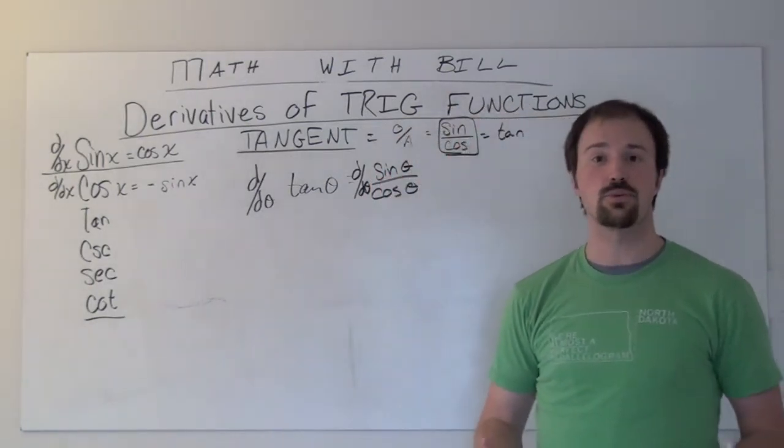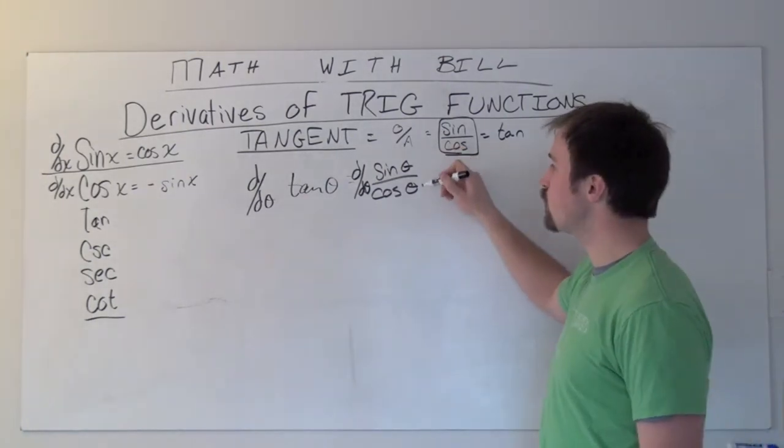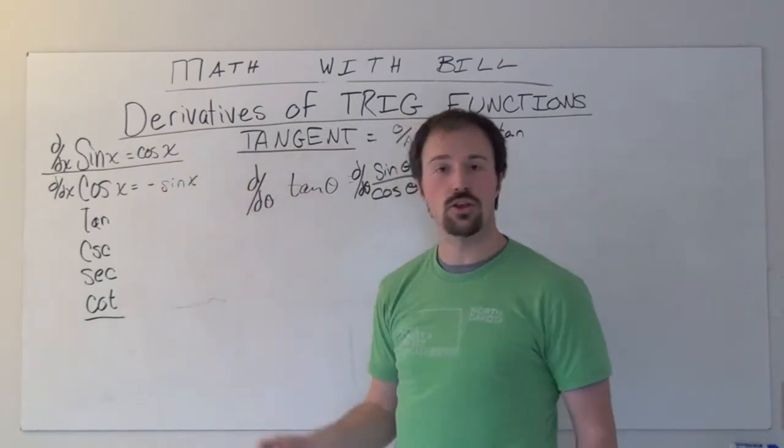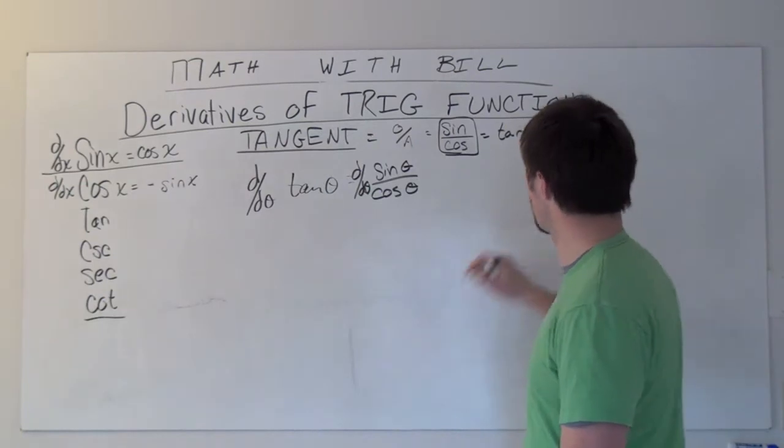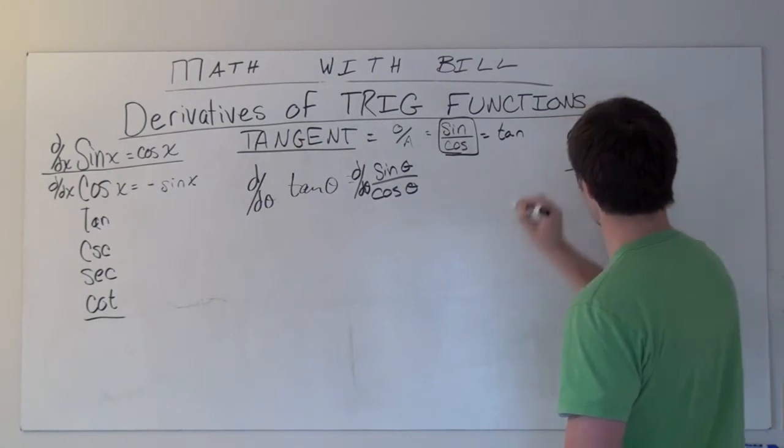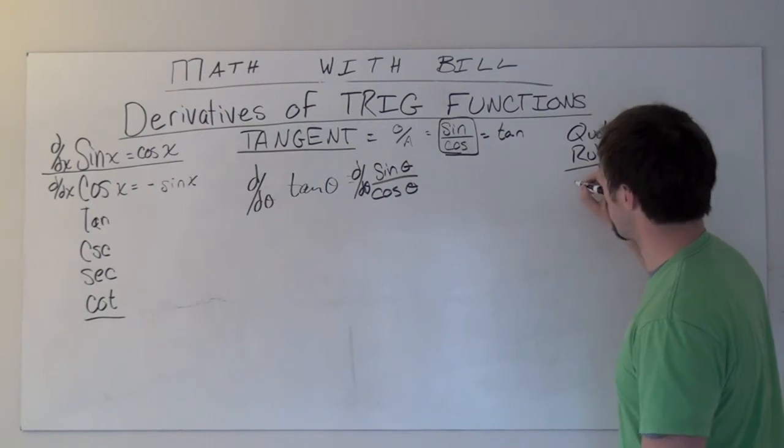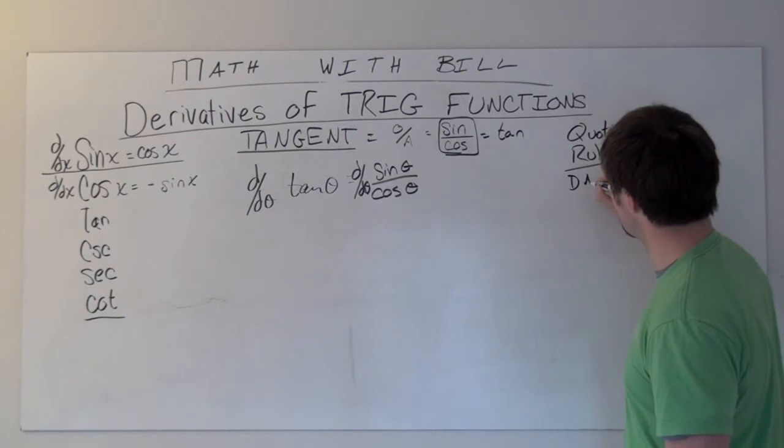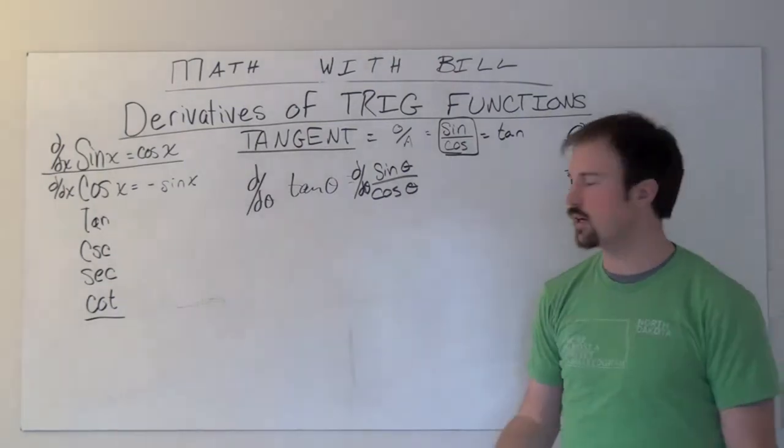I want to take the derivative with respect to theta of this, and this becomes actually pretty easy because now we just have a quotient rule and we have the two functions that we already know the derivatives for. Quotient rule is low d high minus high d low all over low squared, or denominator times derivative of numerator minus numerator times derivative of denominator all over denominator squared.